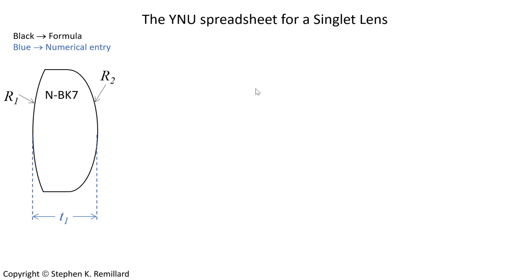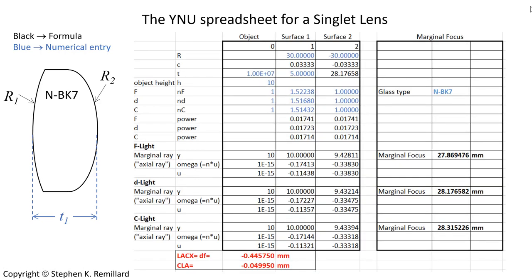We're going to simulate a lens with front surface radius r1 and back surface radius r2, made out of NBK7 glass with thickness T1. I put all the paraxial ray tracing equations into an Excel spreadsheet, along with calculation of the marginal focus for different wavelengths. If needed, you can return to the video on the YNU spreadsheet for background on what this spreadsheet is about. I use a radius on the front of 30 millimeters and a radius on the back of minus 30 millimeters.